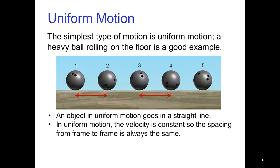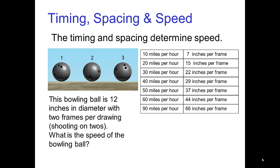In uniform motion, the velocity is constant, so the spacing from frame to frame is always the same. And the larger the spacing, the faster the speed of the motion. Timing and spacing determine speed.